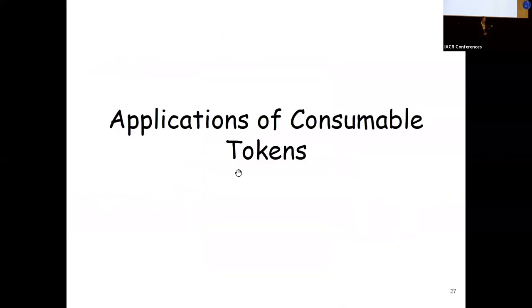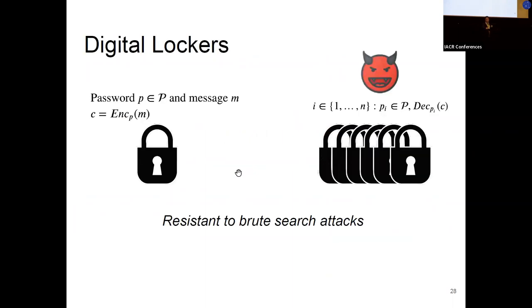In the interest of time, I will discuss these applications at a high level, where in this paper we introduced two of them. The first is digital lockers and the second is one in time programs. A digital locker is simply taking a secret message and encrypted using a low entropy key or a human generated password. We know how to do this. So in the literature, there are many papers around this topic where they construct obfuscators for point functions with multibet output. And these constructions shows that the only possible attack against these digital lockers is exhaustive search over the password space.